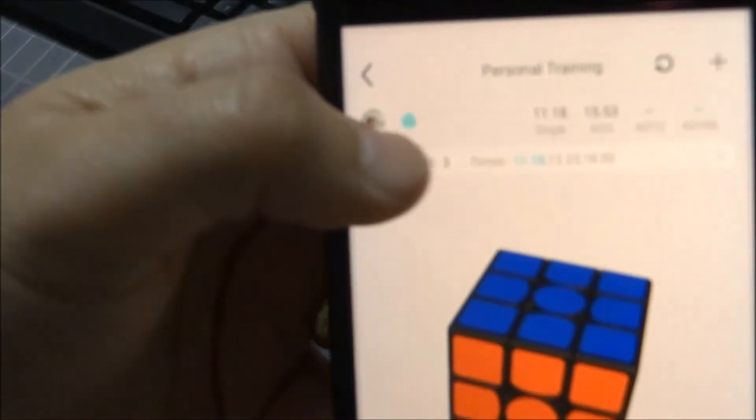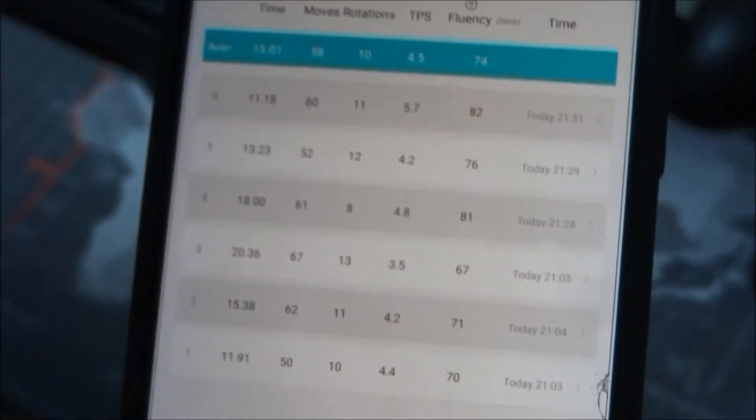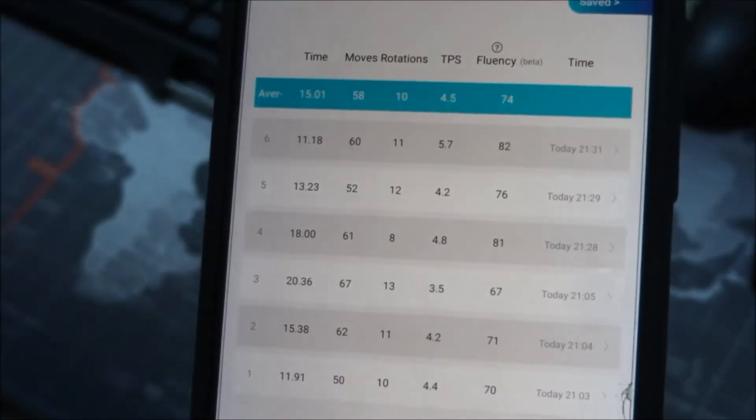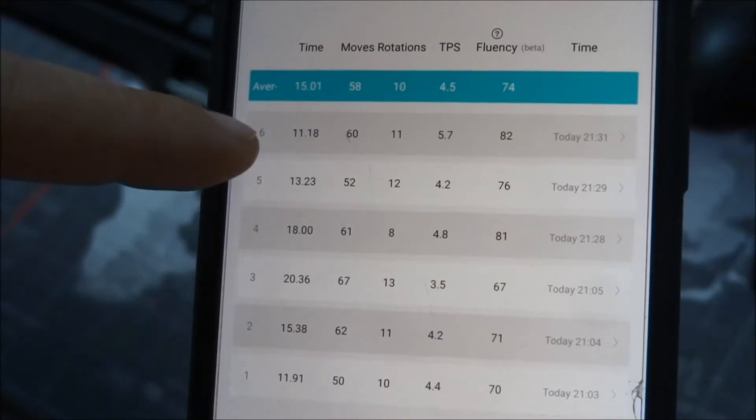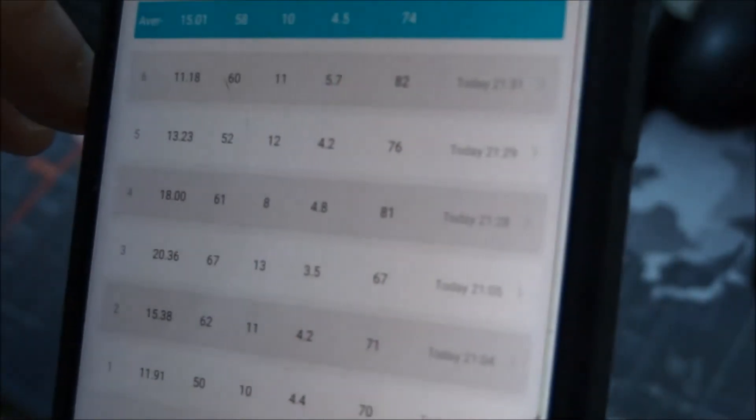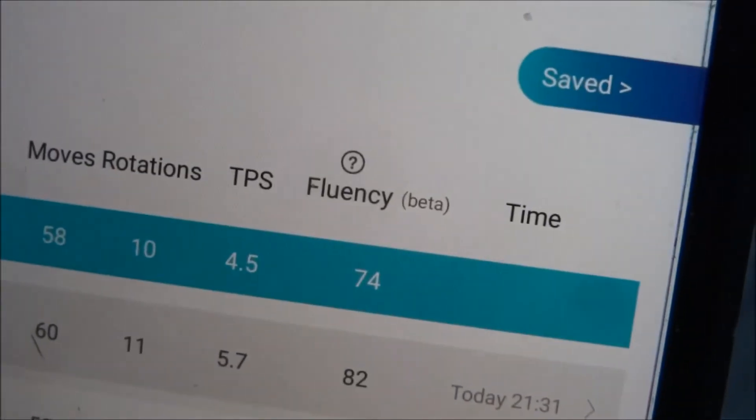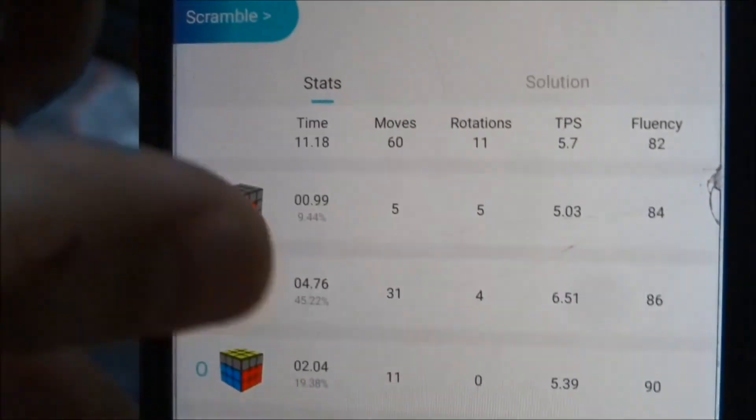And again like before, you have like solve count which is the session, but this actually shows us all the stuff that I've done: moves, rotation, TPS, fluency. What is fluency? I don't know but it says beta and you cannot press it. So again the stats.